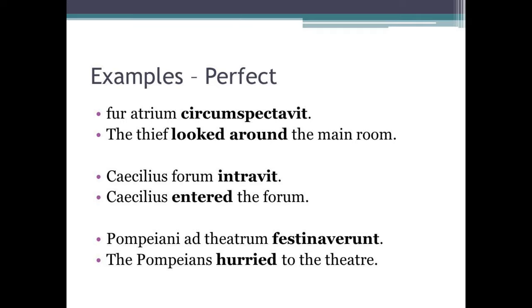Now that we've seen some examples of the imperfect, let's have a look at some examples of the perfect tense in use. 'Fur atrium circumspectavit' — this means 'the thief looked around the main room.' 'Caecilius forum intravit' — this means 'Caecilius entered the forum.' And finally, 'Pompeiani ad theatrum festinaverunt' — this means 'the Pompeians hurried to the theatre.'